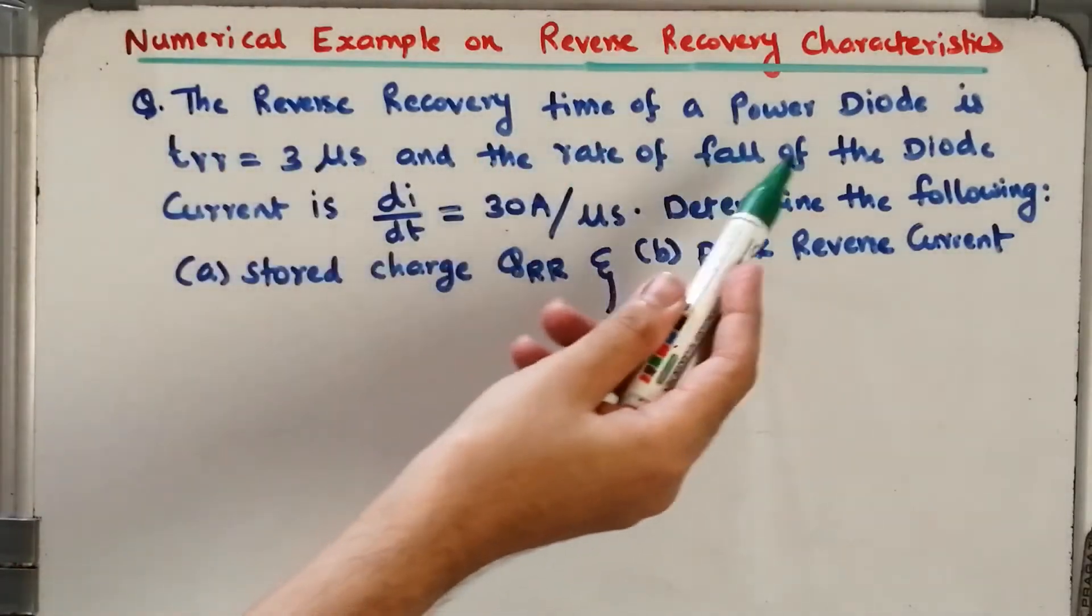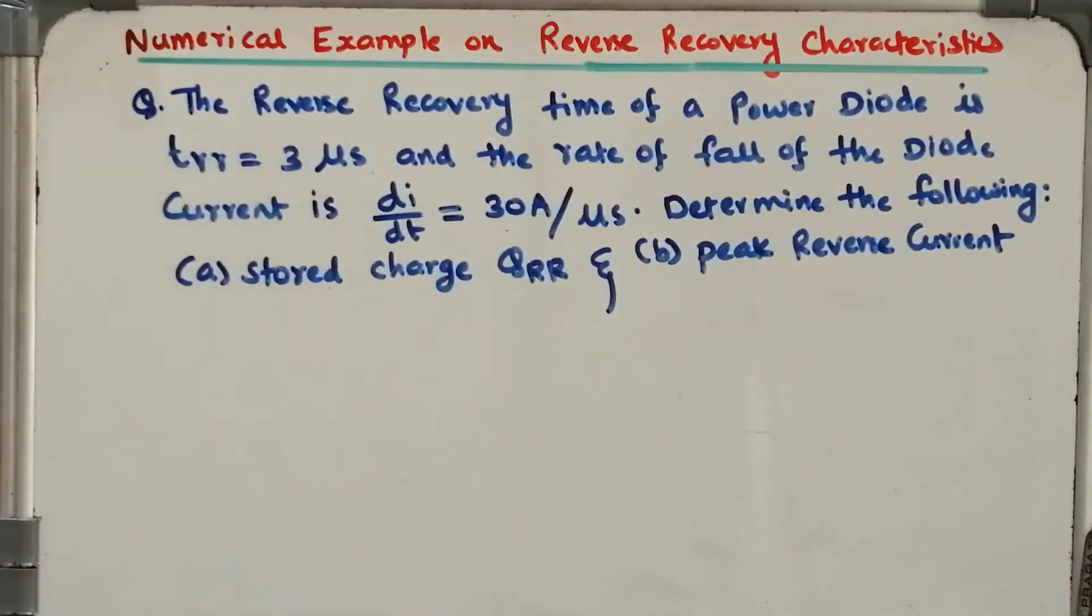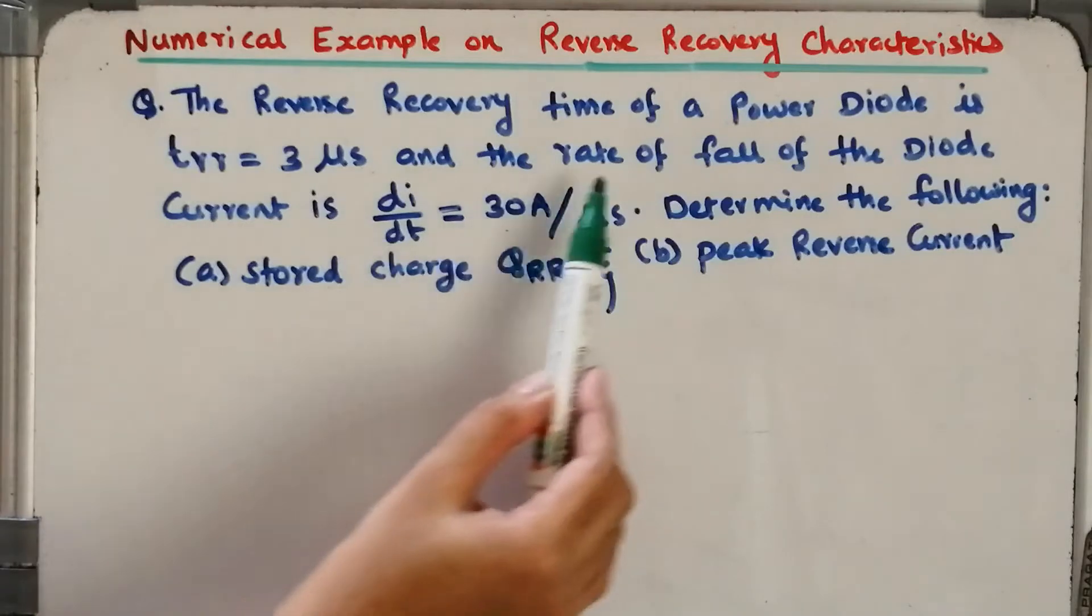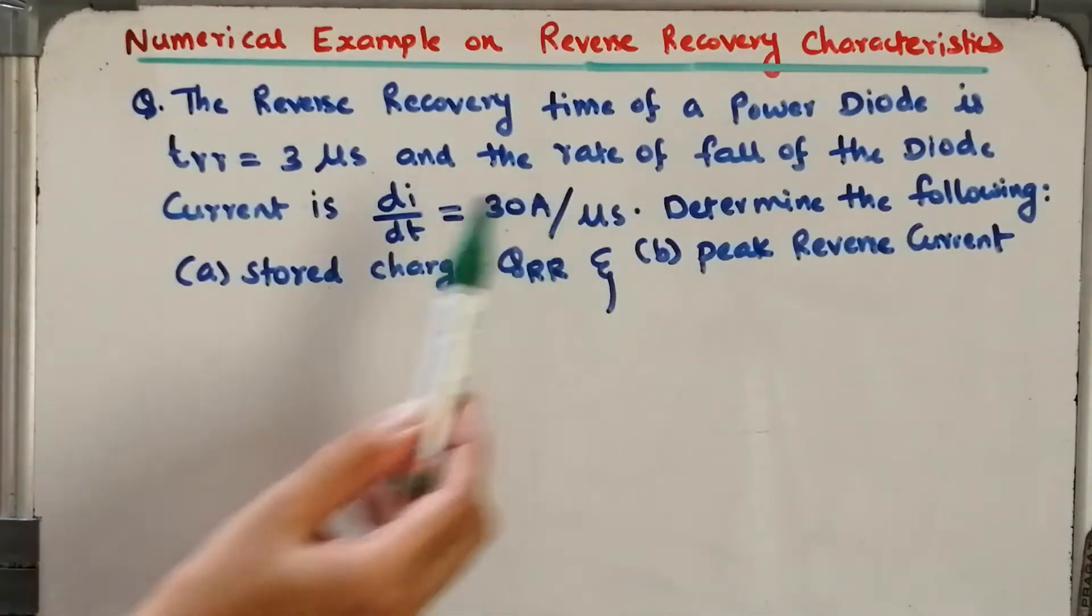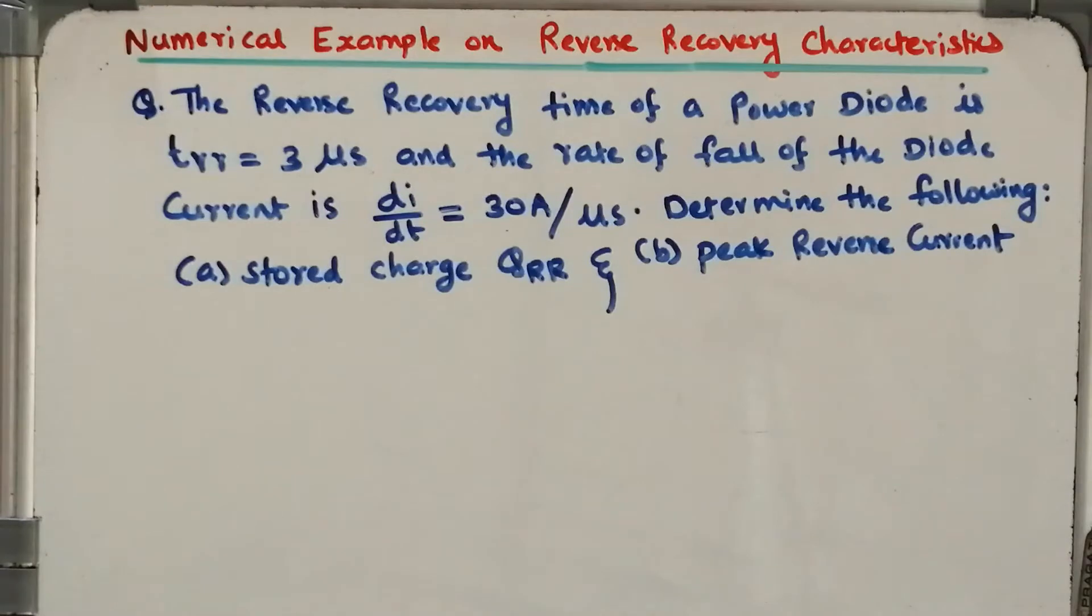The reverse recovery time of a power diode TRR is given by 3 microseconds, and the rate of fall of the diode current is dI/dt equal to 30 Ampere per microsecond. Determine the following parameters: stored charge QRR and peak reverse current.